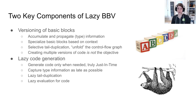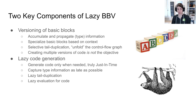There are two key components of lazy basic block versioning. The first is the versioning of basic blocks, and the second is lazy code generation. We do versioning of basic blocks so that we can accumulate and propagate type information in specialized basic blocks based on context — that's selective tail duplication. The point is not to create multiple versions of code, but really to use it as a tool to propagate information and keep track of it inside context objects. The second aspect is lazy code generation, so that we generate code only when it's needed — truly just in time — capturing type information as late as possible when values flow in specific parts of a program.